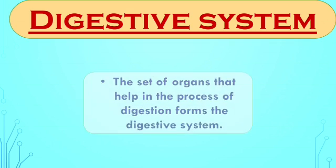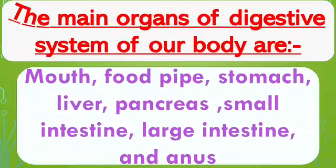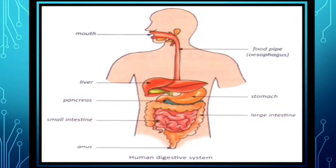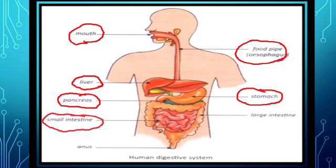The digestive system is made up of many organs that work together to help in digestion. The main organs of the digestive system are the mouth, food pipe, stomach, liver, pancreas, small intestine, large intestine, and anus. See in the picture of the human digestive system — it shows the mouth, food pipe also known as the oesophagus, liver, stomach, pancreas, small intestine, large intestine, and anus.